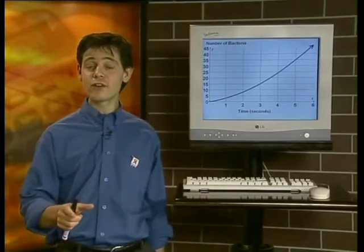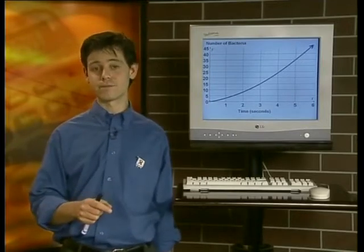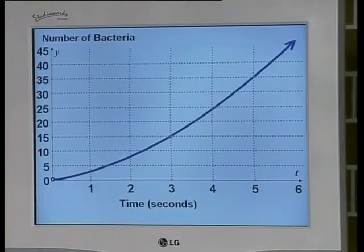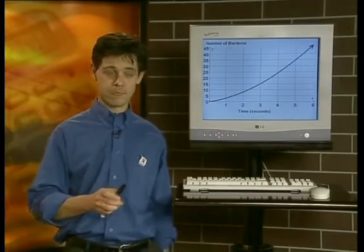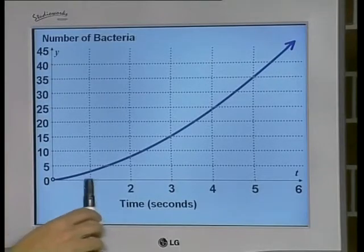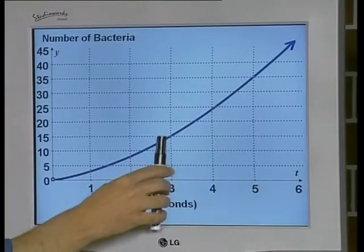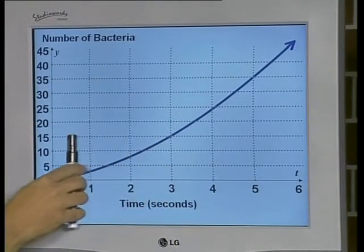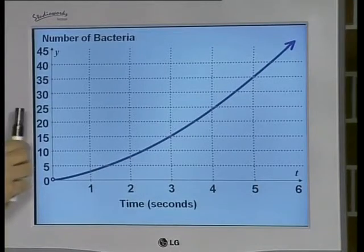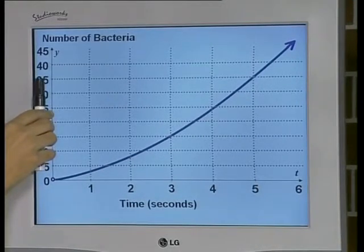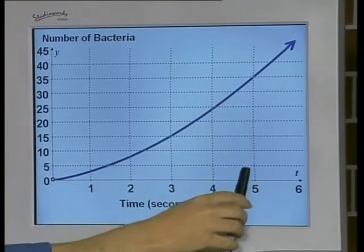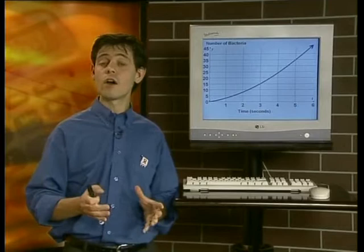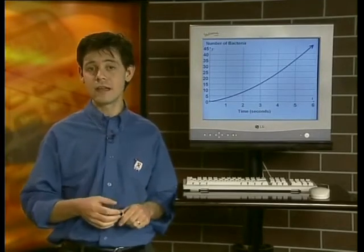Let's analyze the growth of bacteria here on an accurate graph. After three seconds, what is the number of bacteria? We need to look at the corresponding output value. So when t is equal to 3, the number of bacteria or output value is 15. Now if the number of bacteria or output value is 35, we can see that the corresponding input value is 5. This means that after five seconds the number of bacteria is 35.